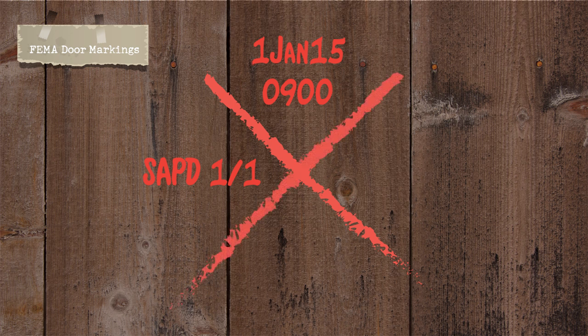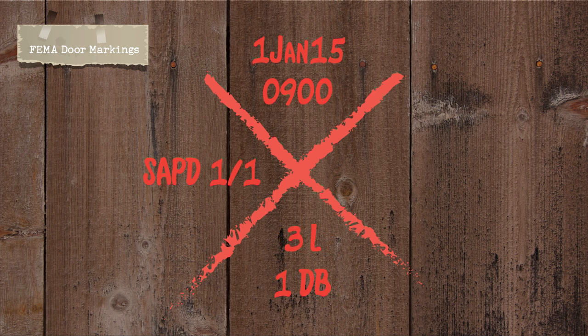The next marking recorded is a personnel marking — it records any casualties or people found in the building. Say you entered and found three live people who were evacuated and one dead body; this is the marking you would leave. For a bit of privacy, these markings are often slightly more discreet — it might say '3L / 1D' or '3 / 1DB.' If you know that one quadrant marks live evacuees and another marks dead bodies or injured parties, you can piece together what those abbreviations mean.